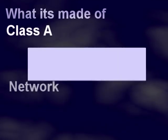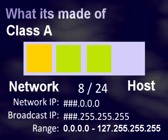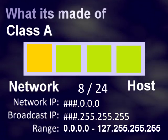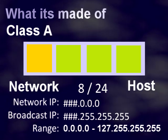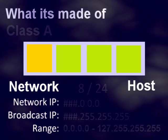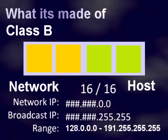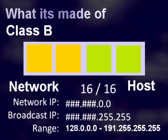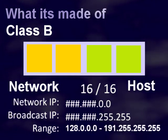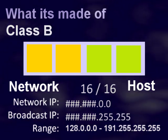A Class A address has 8 bits for the network and 24 bits for the host. The hash symbol represents the network IP, and it can have a range of 0 to 127.255.255.255. A Class B address has 16 bits for the network and 16 bits for the host, with a range of 128.0.0.0 to 191.255.255.255.